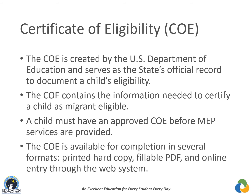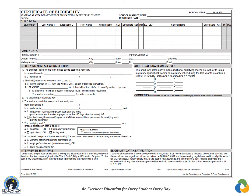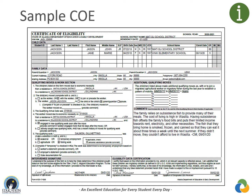The COE is available for completion in several formats: printed hardcopy, fillable PDF, and online entry through the Alaska Migrant Web System. In this video, we'll go through the different sections and fields of the COE. A separate video will discuss how to create a COE through the web system. Districts fill out a COE when they believe they have identified a child who is potentially eligible for the program. Let's look at this sample filled-out COE.